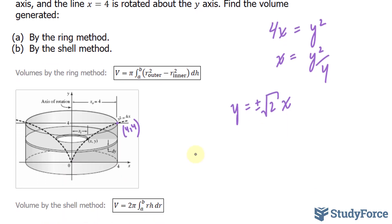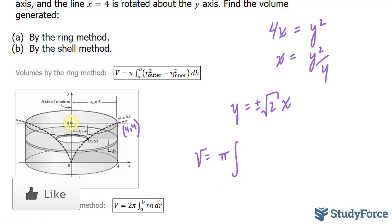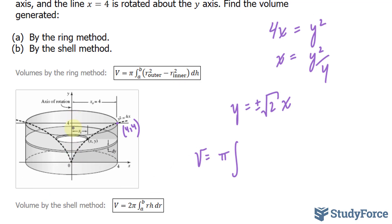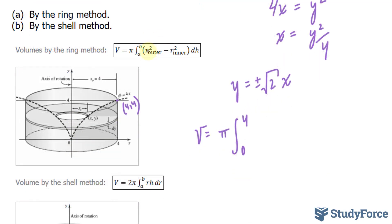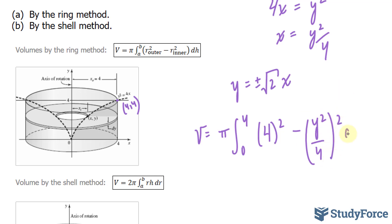Here's how the integral looks: v equals pi times the integral from 0 to 4 — because we discovered the bounds are 0 and 4, and since it's in terms of y, it integrates between 0 and 4. The outer radius squared is 4 squared, minus the inner radius squared, which is (y squared over 4) squared, dy.